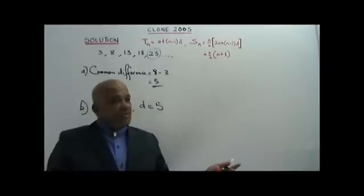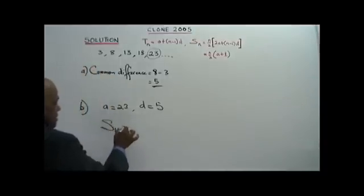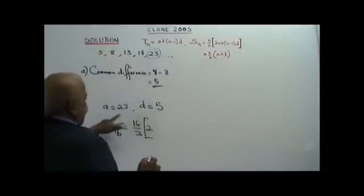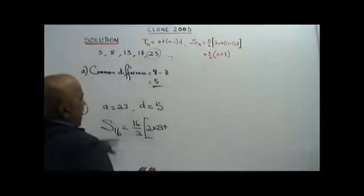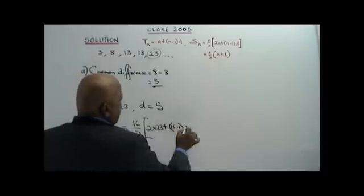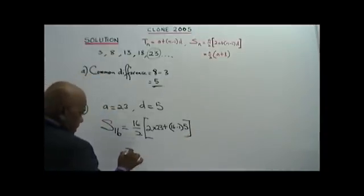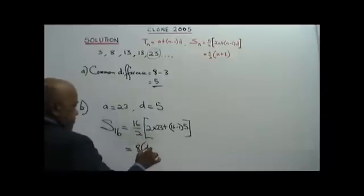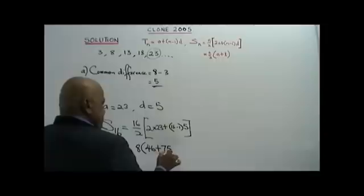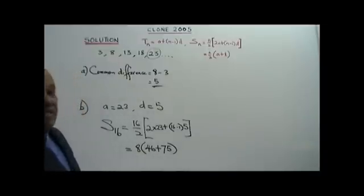Now, what is S16? S16 equals N over 2 bracket 2A plus N minus 1 times D. That is 16 over 2 bracket 2 times 23 plus 16 minus 1 times 5. So we get 8 bracket 46 plus 15 times 5, which is 75. 46 plus 75 is 121.